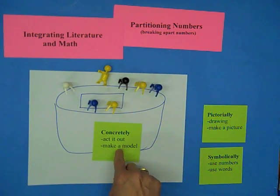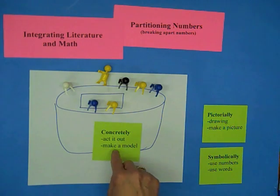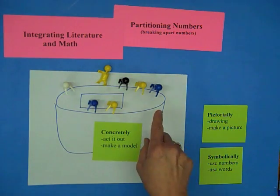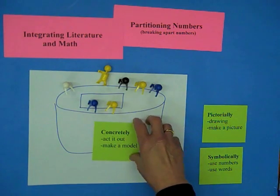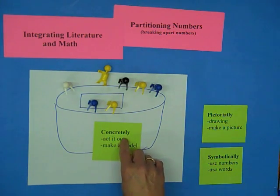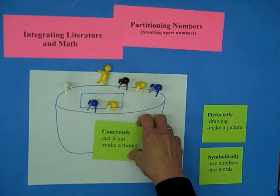Now, we could also have this as the students acting it out. We could have seven students. You could have a mat, for example, as the bar of soap, or you could get creative. But we're making a model with the kids.